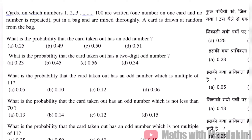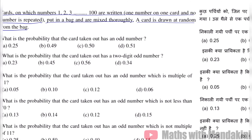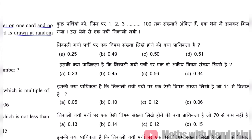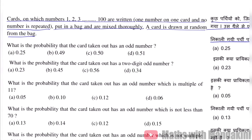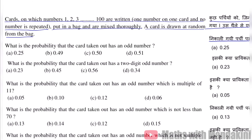Now we will see the next question. Cards on which numbers 1, 2, 3... up to 100 are written, one number on one card and no number is repeated, are put in a bag and mixed thoroughly. A card is drawn at random from the bag. So we have cards numbered 1 to 100 in a bag. What is the probability that the number drawn is an odd number? If we look at numbers 1 to 100, how many odd numbers are there in total? 1 is odd, 2 is even, 3 is odd — alternating.